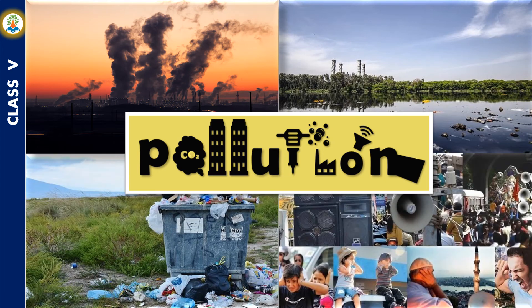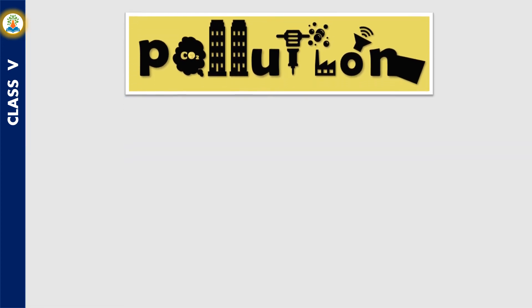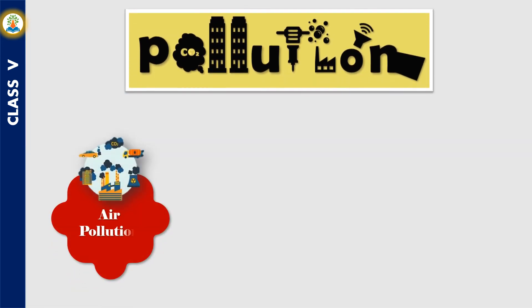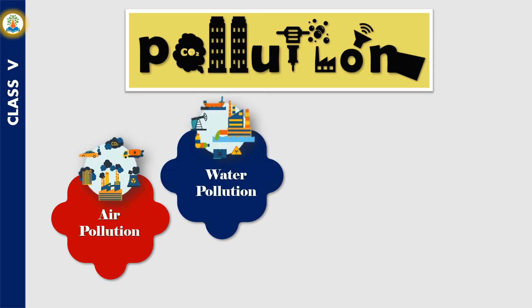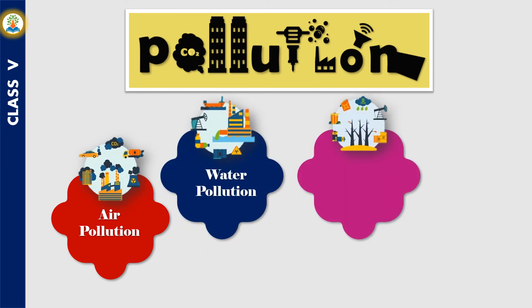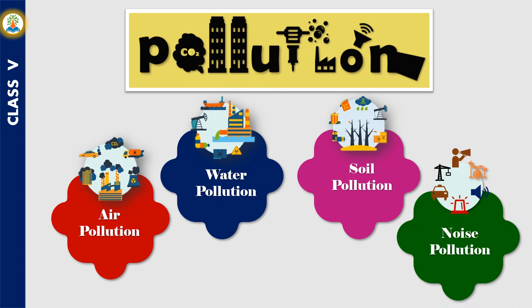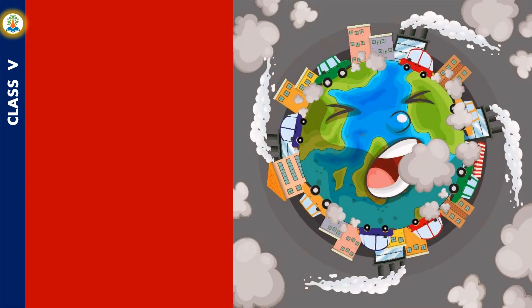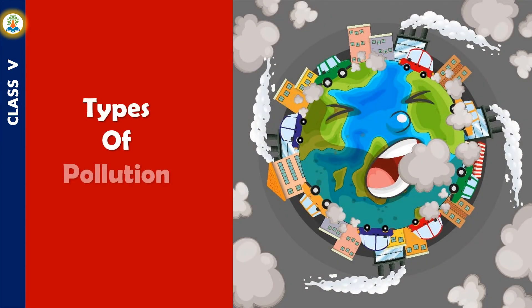Addition of any unwanted and harmful substance to the environment that changes its quality is called pollution. There are different types of pollution: air pollution, water pollution, soil pollution, and noise pollution. Let us learn in detail about all four types of pollution, their sources and effects.